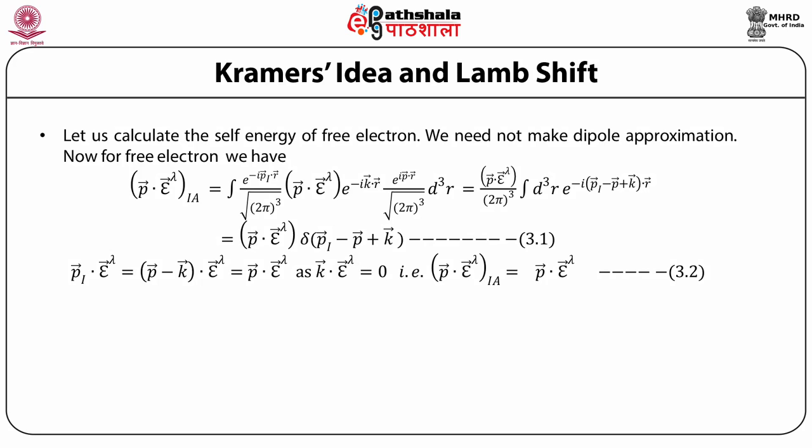We need not make the dipole approximation. Now for the free electron, we have p dot epsilon matrix element between I and A equal to p dot epsilon into delta function of P_I vector minus P vector plus K vector. P_I vector dot epsilon_lambda vector equals P vector minus K vector dot epsilon_lambda vector, which equals P dot epsilon vector, as K dot epsilon is 0. That is, p dot epsilon vector matrix element between I and A equals p dot epsilon vector only.